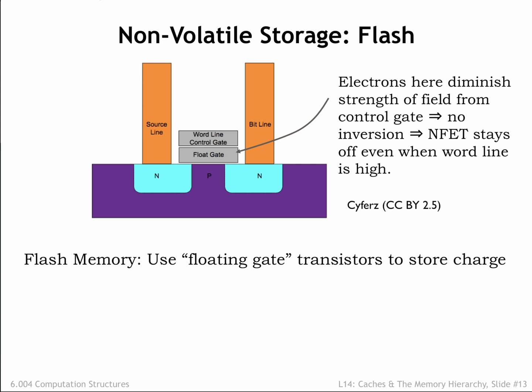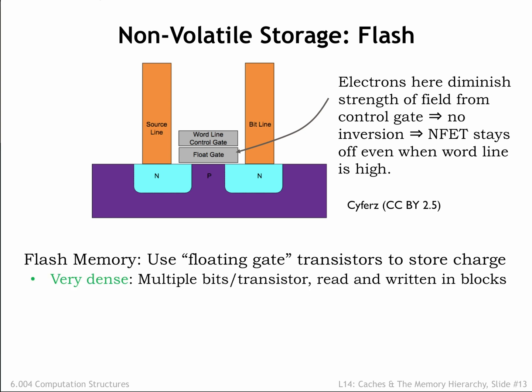Flash cells can be connected in parallel or series to form circuits resembling CMOS NOR or NAND gates, allowing for a variety of access architectures suitable for either random or sequential access. Flash memories are very dense, approaching the aerial density of DRAMs, particularly when each cell holds multiple bits of information.